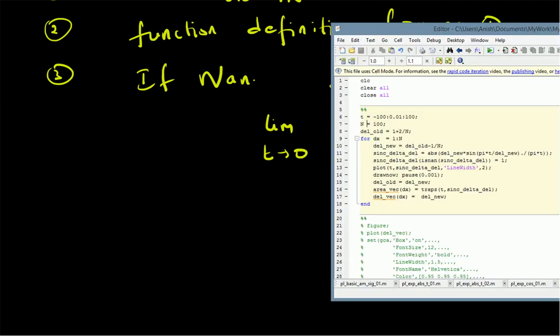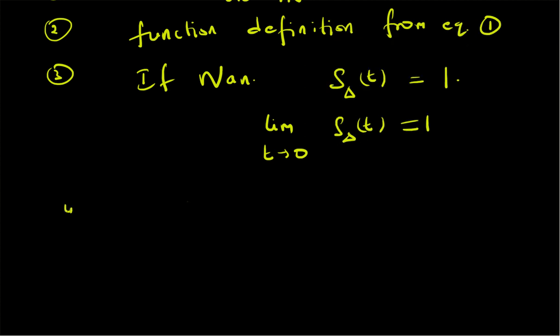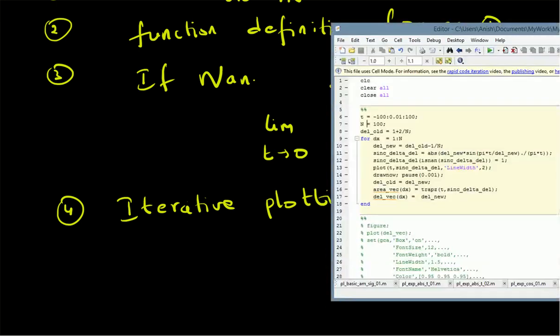Step four: iterative plotting. We plot the signal for the first value of delta, then replace it with signal values for the second value of delta, and continue the process for all values of delta. We use the plot function along with the drawnow and pause commands, with 0.001 seconds between consecutive plots.